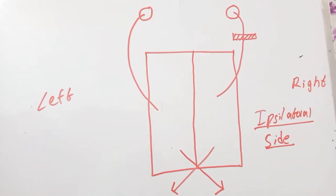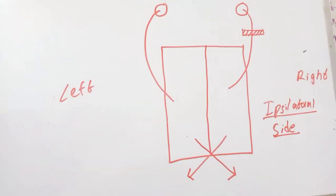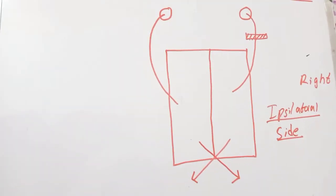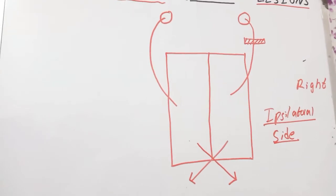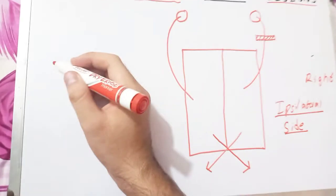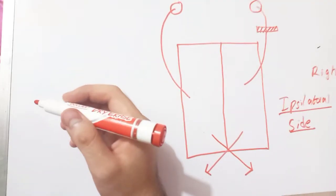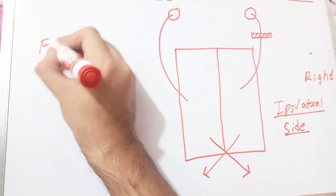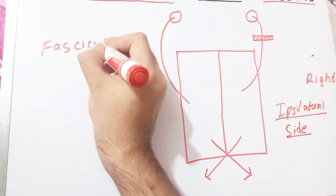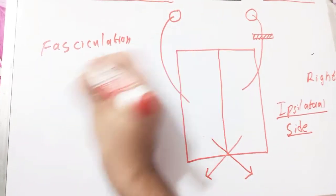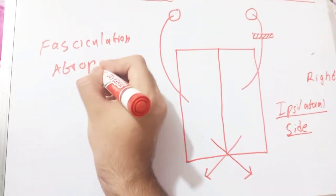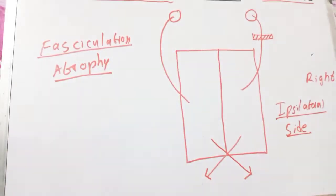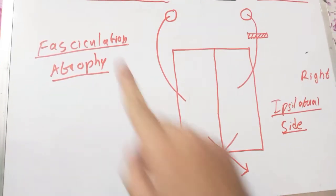Another thing to know is that when there is a lower motor neuron lesion, two other phenomena are associated with it — phenomena associated with almost every lower motor neuron lesion of the spinal nerves and also the cranial nerves. These two phenomena are fasciculation and atrophy.